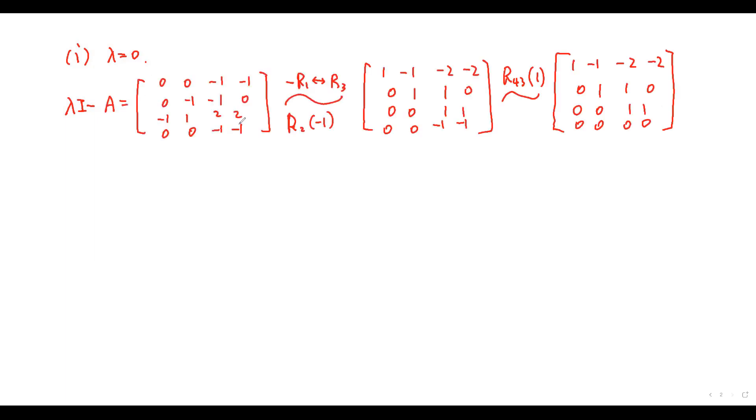For eigenvalue equals zero, the matrix lambda I minus A equals, by row operations, this matrix can be reduced to this matrix. From this matrix, we get the eigenvector corresponding to lambda equals zero is given by that one. This gives that this matrix is zero.